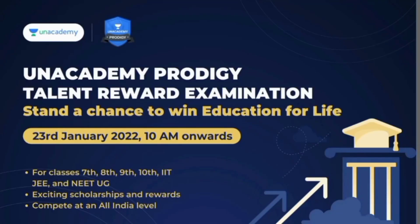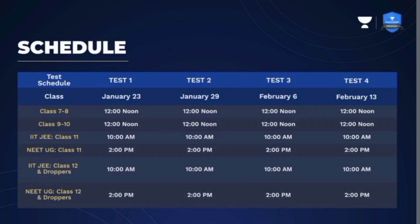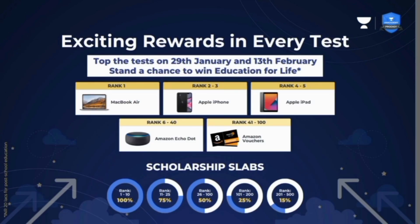Anacademy is launching the biggest test of the year for classes 7th to 10th, conducted on 23rd and 29th Jan, then 6th and 13th Feb. Every participant gets a chance to win education for life — top scorers can win up to 100% scholarship from graduation to post-graduation, worth up to 20 lakhs. This education-for-life prize is valid only for the tests on 29th Jan and 13th Feb. You can also win MacBook, iPhone, and iPad. After the test, you'll get a detailed scorecard and video solutions for all questions. Practice tests start from 15th Jan — all links are in the description box.